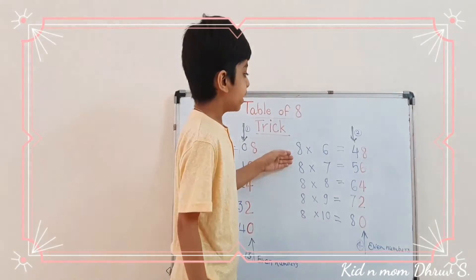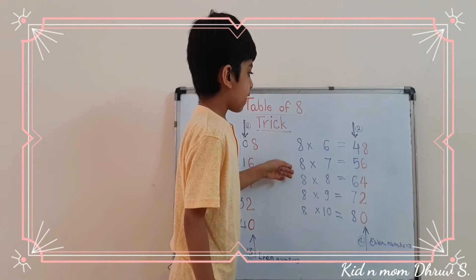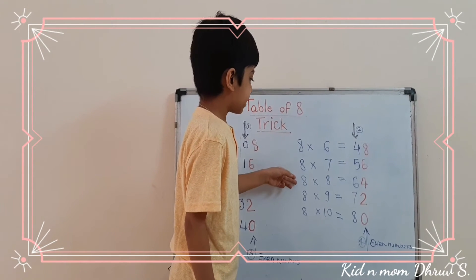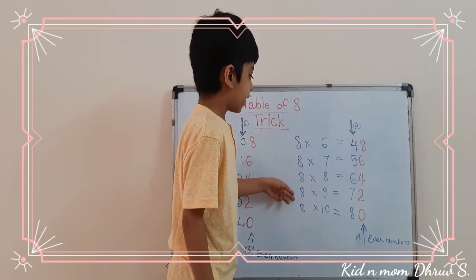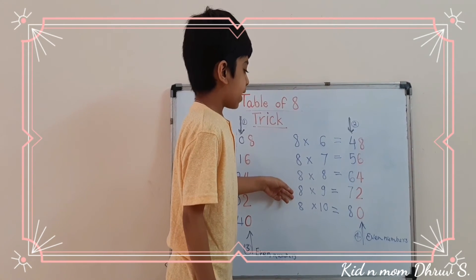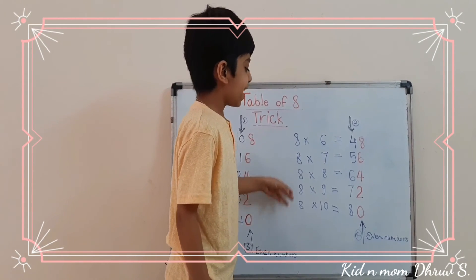Then, 8 times 6 is 48. 8 times 7 is 56. 8 times 8 is 64. 8 times 9 is 72. 8 times 10 is 80.